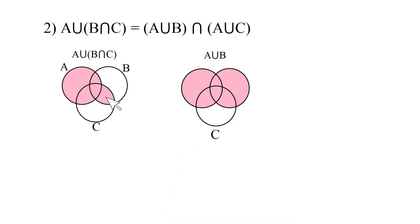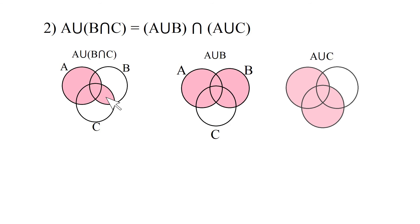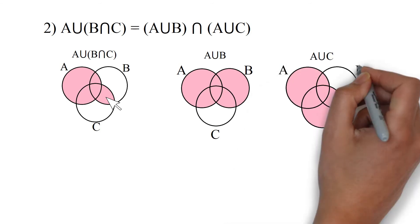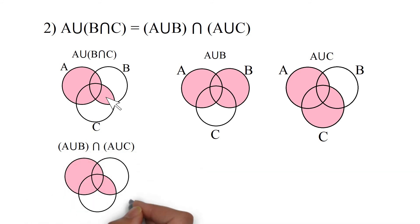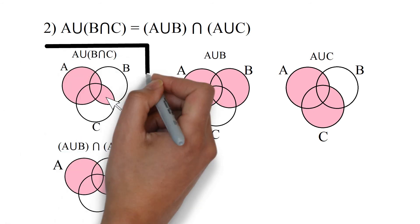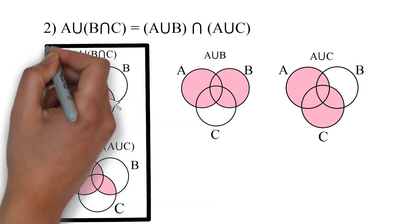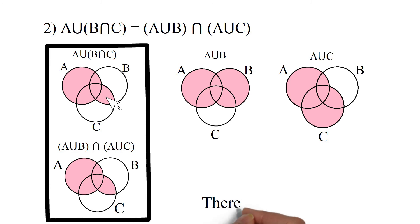This Venn diagram represents A union B, and similarly I have represented A union C. Now I have represented (A union B) intersection (A union C), which contains all the elements belonging to both. So now we can say A union (B intersection C) equals (A union B) intersection (A union C) from the Venn diagram. Therefore the left hand side is equal to the right hand side.